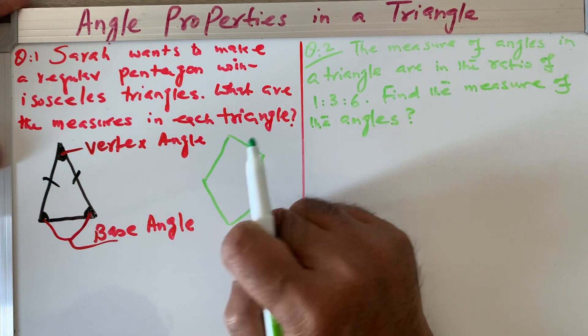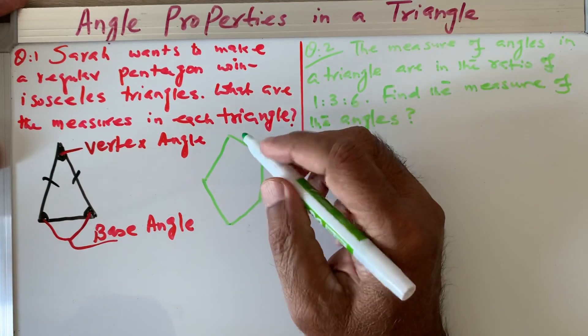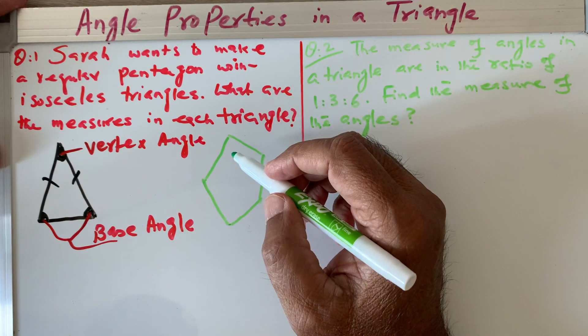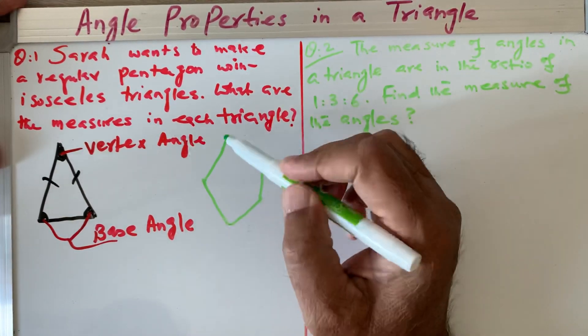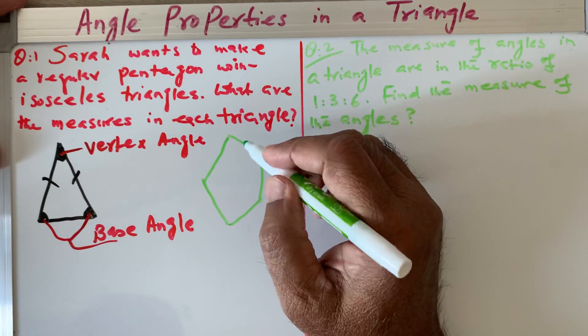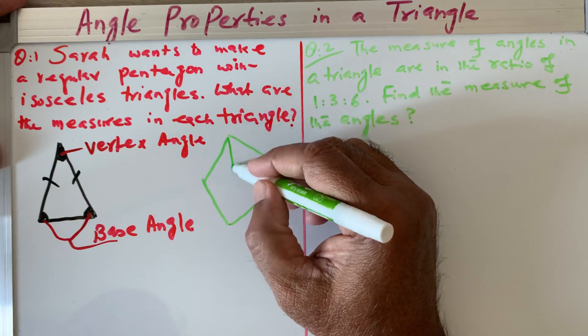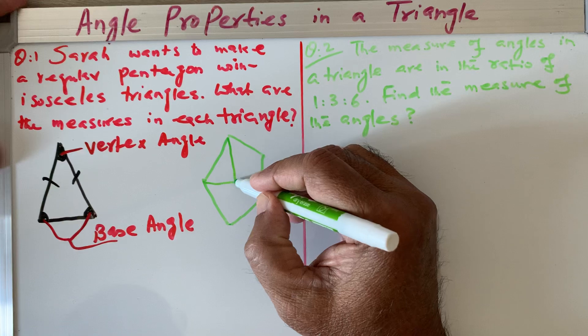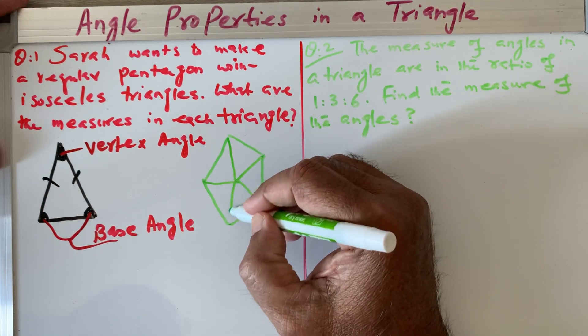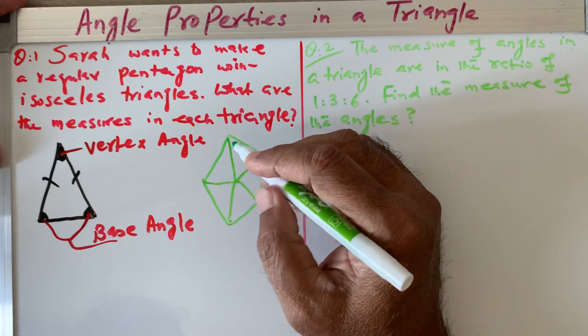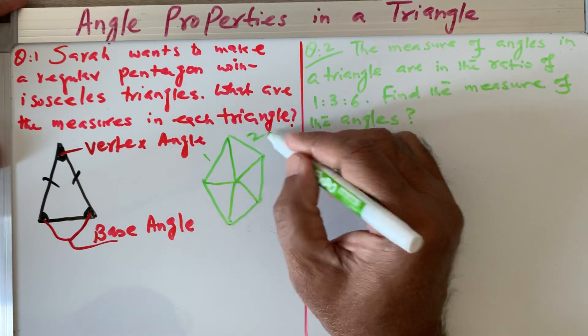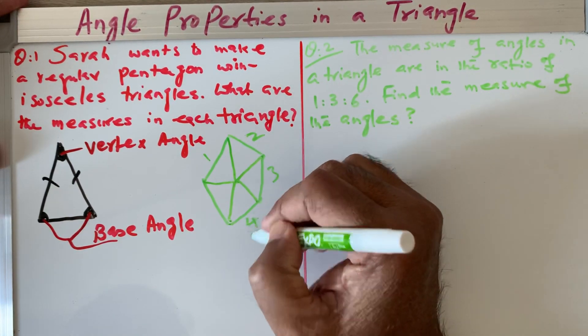What is she looking for? She is looking for a regular pentagon and the question is asking what are the measures in each triangle. So first of all, we have to develop all my triangles which are isosceles.